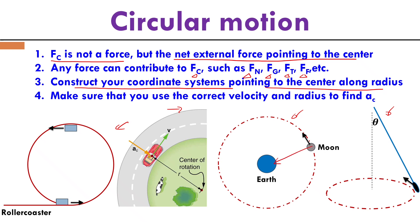For circular motion, you always want to construct your coordinate system pointing to the center along the radius. For the roller coaster at the top, positive direction should go down; at the bottom, positive direction should go up. For the car moving in a circle, the radial direction is your coordinate axis. For a point mass swung by a string, horizontal is your x-direction and vertical is your y-direction.